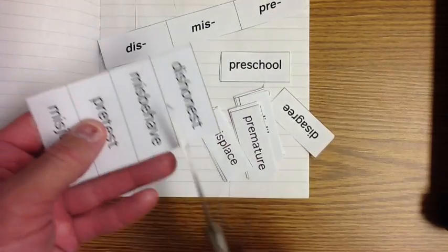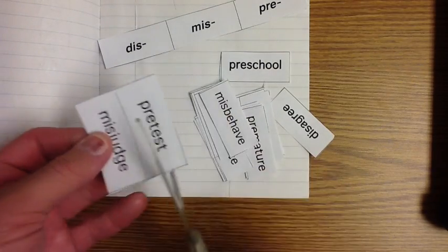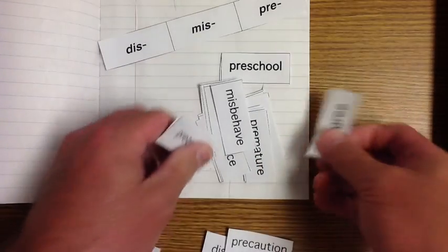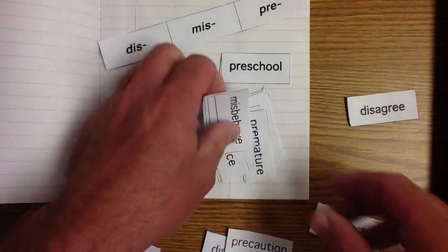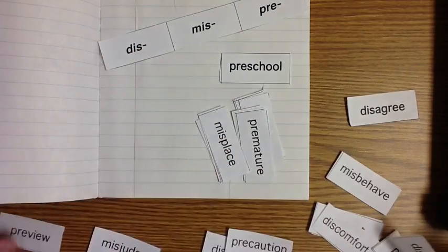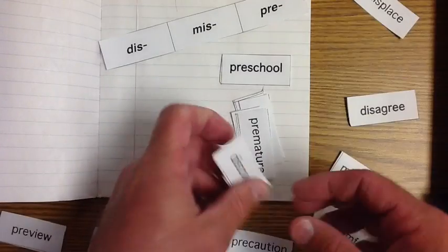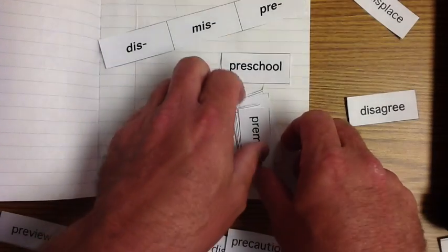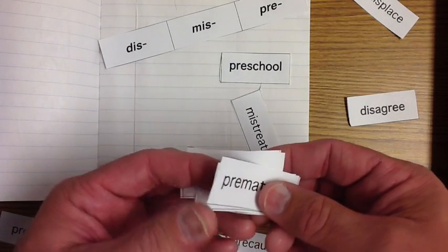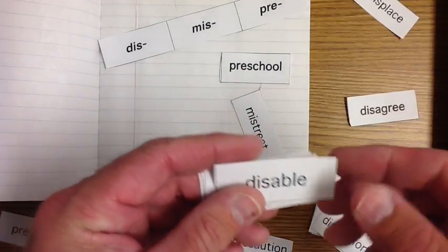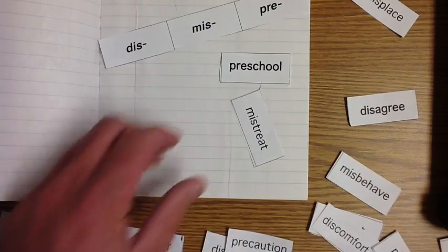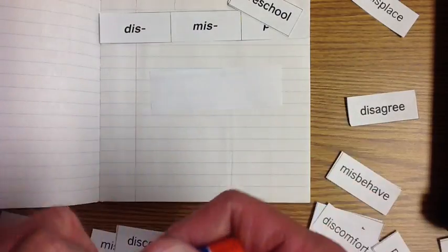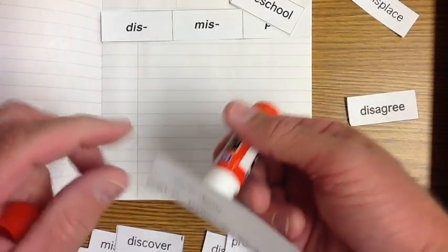I am almost done. I'm going to put these words together, spread them out a little bit so I know what I'm doing. The thing I want you to know is we are talking about prefixes. What a prefix is, is some letters that are put at the beginning of a word, a root word, that changes its meaning.